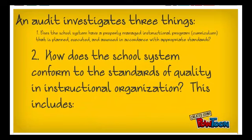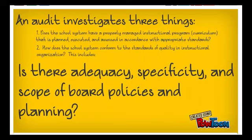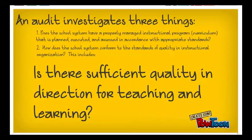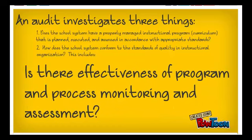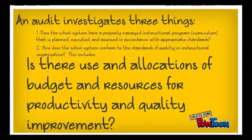Second, how does the school system conform to the standards of quality in instructional organization? This includes five things: Is there adequacy, specificity, and scope of board policies and planning? Is there sufficient quality and direction for teaching and learning? Is there consistency and equity in schools and program implementation? Is there effectiveness of program and process monitoring and assessment? Is there use and allocation of budget and resources for productivity and quality improvement?